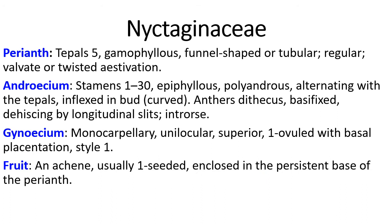Here let us discuss about floral and reproductive characters. Perianth is made up of tepals which are five in number. They are gamophyllous, funnel-shaped or tubular, sometimes regular also. Aestivation is either valvate or twisted.